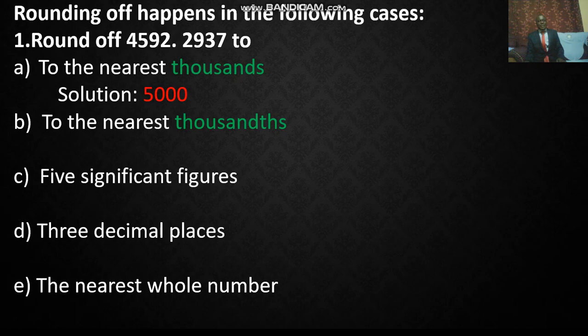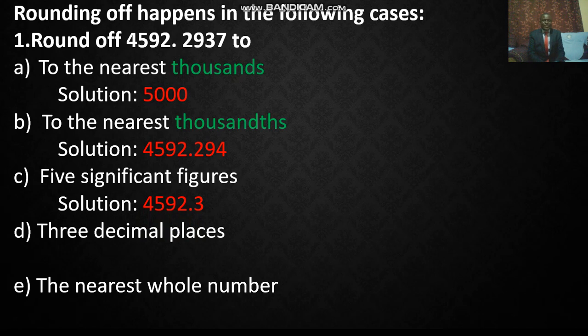To the nearest hundreds, 9 occupies that place value and the median digit that follows is 2, less than 5, so it remains 4,592.2. To five significant figures, 2 occupies that place value. In this case the number that follows is more than 5, so it becomes 4,592.3. To three decimal places, 3 occupies that position. The number that follows is digit 7, more than 5, so it becomes 4,592.294.